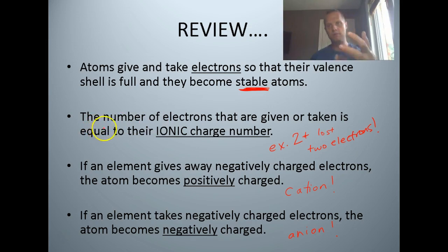The number of electrons that you give away or take depends on the ionic charge number, which I'm going to show you on the periodic table in a second. We do know if an element gives away negatively charged electrons, it will become positive. So if you give some electrons away, you still have protons left over that make you positive. Elements that take electrons will become negative because electrons are negative, and they're going to take as many electrons as their ionic charge number.